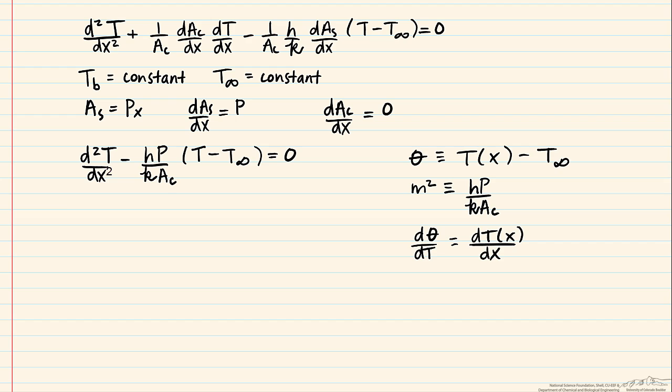So what we're left with is d squared theta dx squared minus m squared times theta equals zero. This is a linear homogeneous second order differential equation with constant coefficients, and the general solution has the form that theta of x is equal to c1 e to the mx plus c2 e to the minus mx.